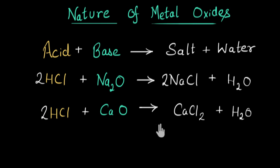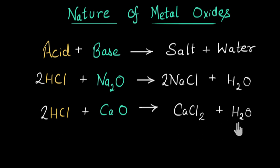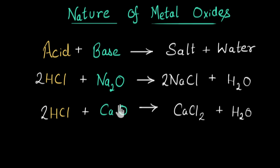This is a balanced chemical reaction. Here also the metal oxide is reacting with an acid to give a salt and water. And since we are getting salt and water, we can see that this metal oxide is a base. So we can say in general that metal oxides are basic in nature — they behave as bases, and this means they can neutralize acid and form salt and water.